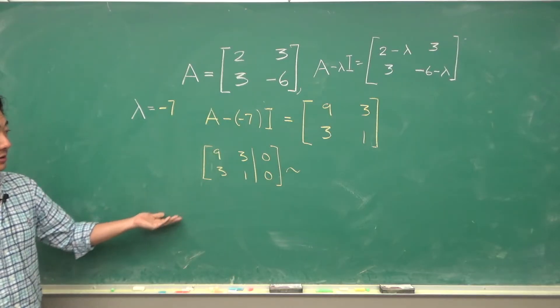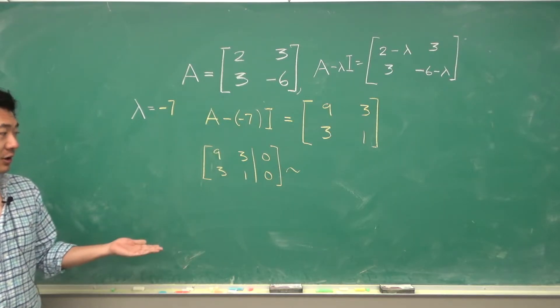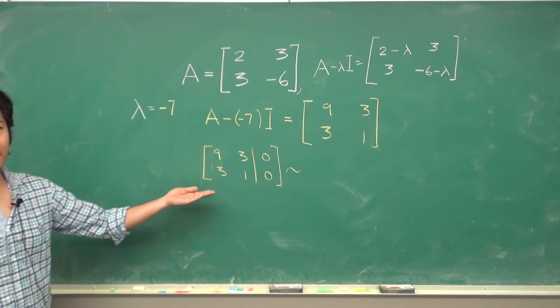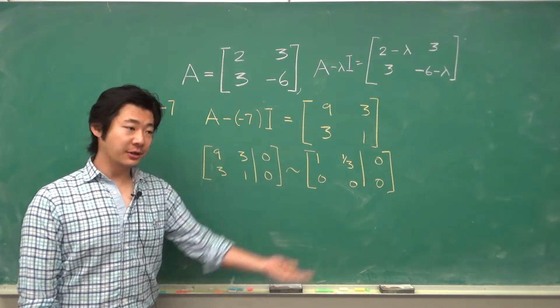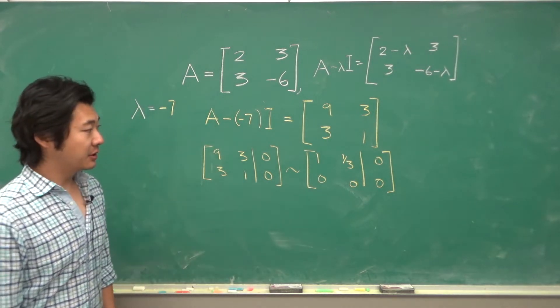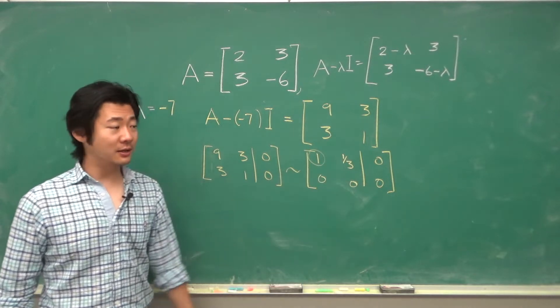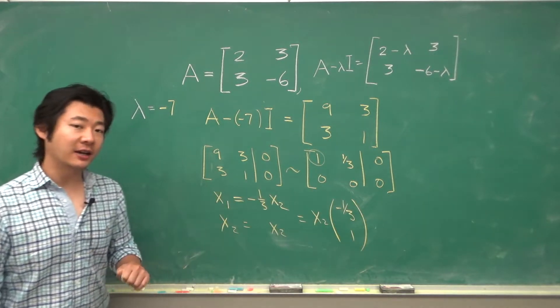Now remember we're trying to solve for the homogeneous equation corresponding to this. So when we form the augmented matrix, after converting this into reduced row echelon form we will get 1, 1/3, 0, and 0s everywhere else. So our pivot position is here. And x2 will be our free variable column. So we have this as our eigenvector.